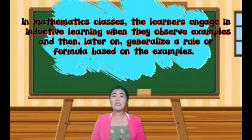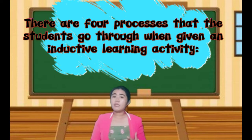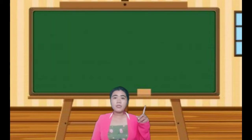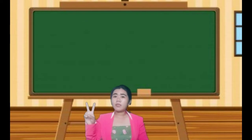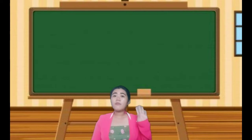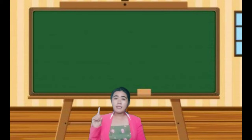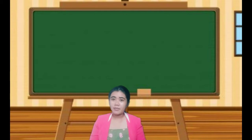There are four processes that students go through when given an inductive learning activity. First is observe, second is hypothesize, third is collect evidence, and fourth is generalize. Today we will discuss the first process of inductive learning, which is to observe.